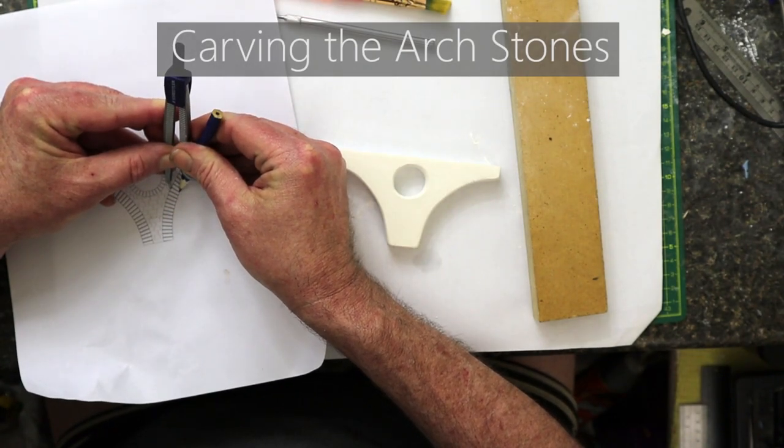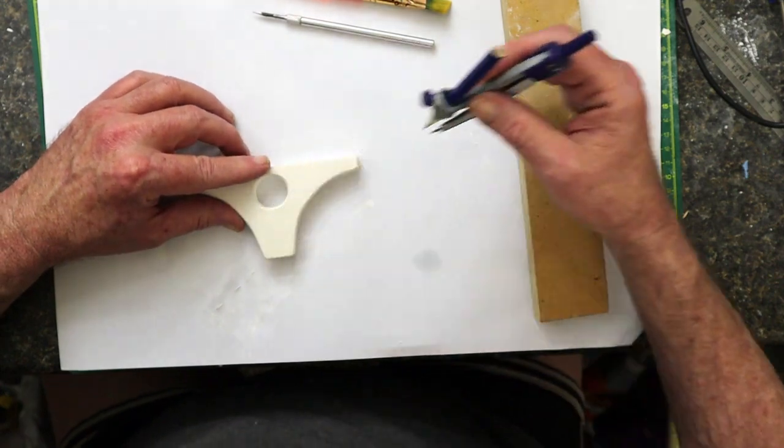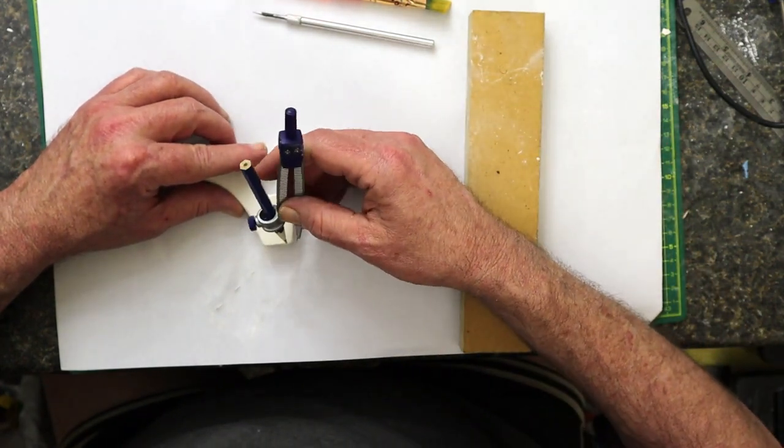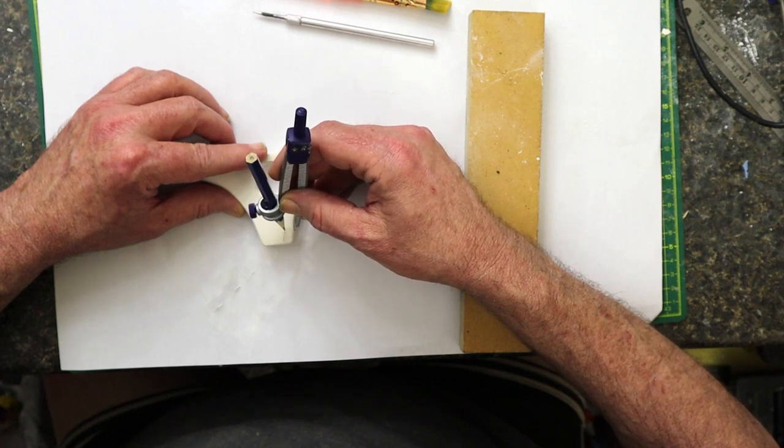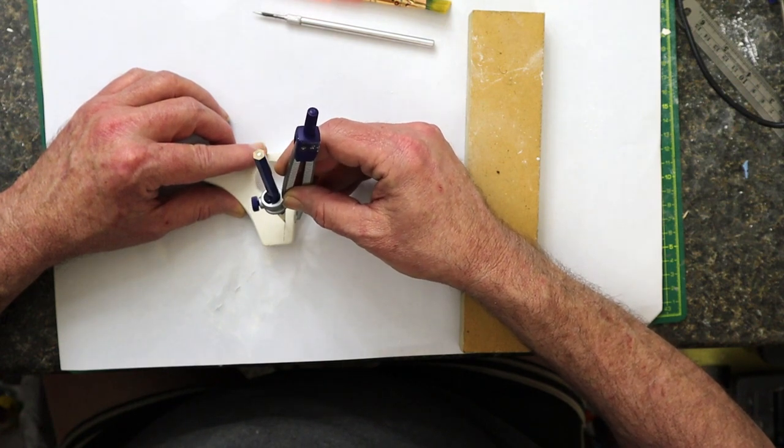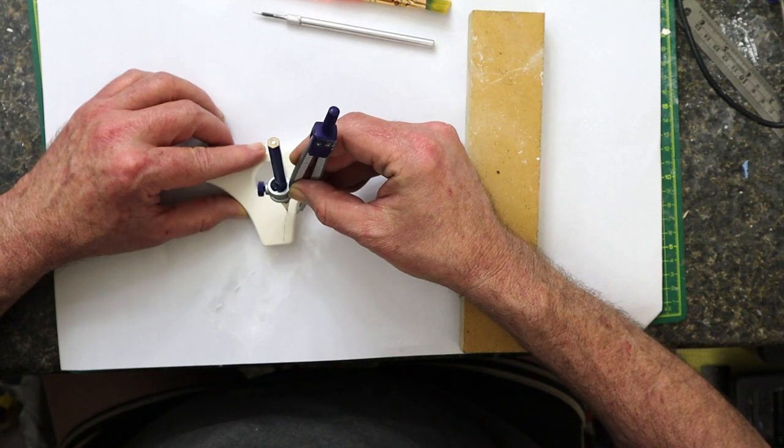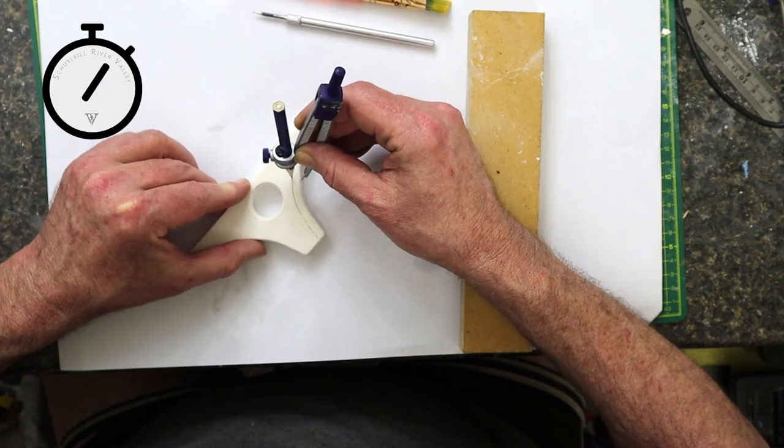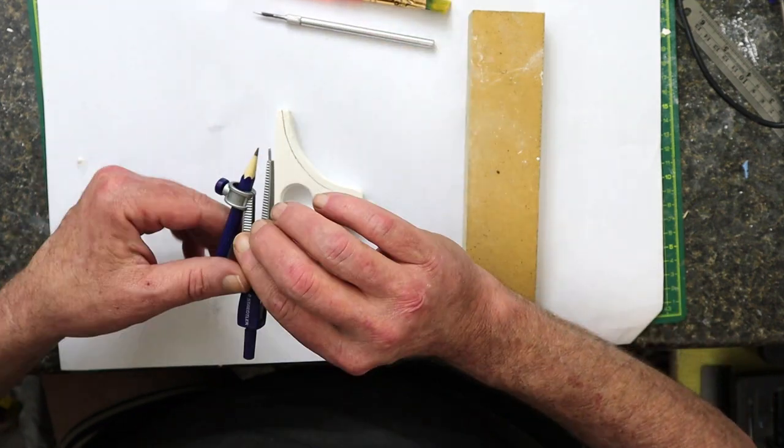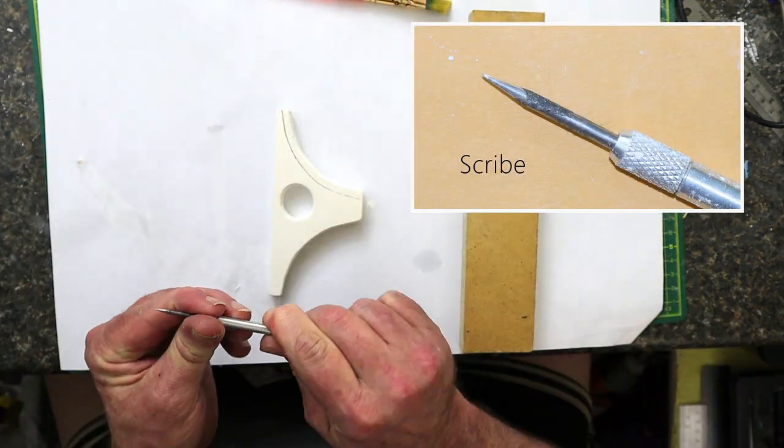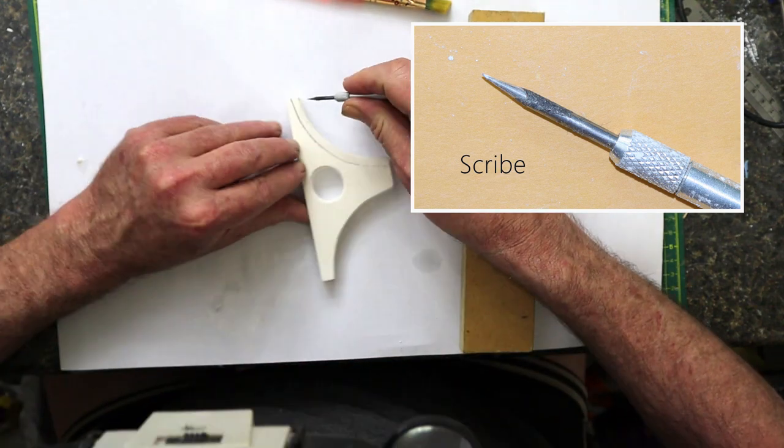To carve the arch stones, I start by using a compass to draw the stones onto the casting. Using a scribe, I carved the outline of the stones.